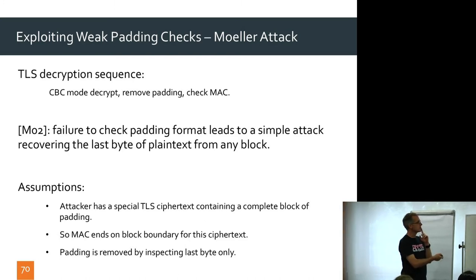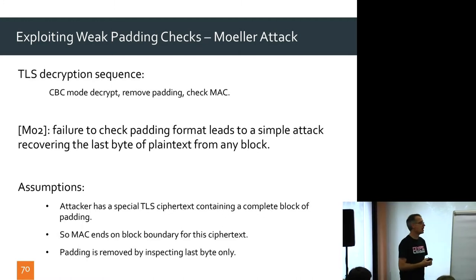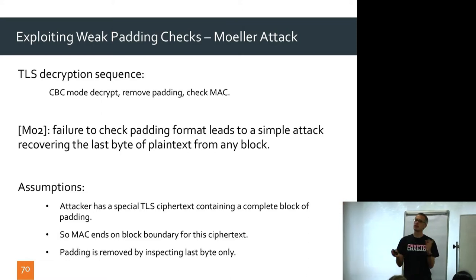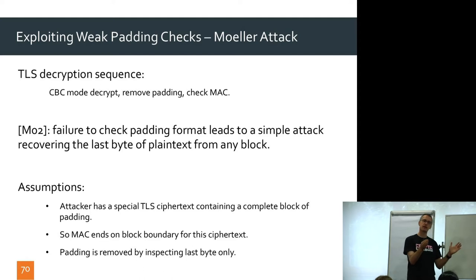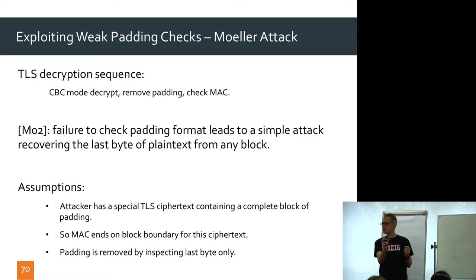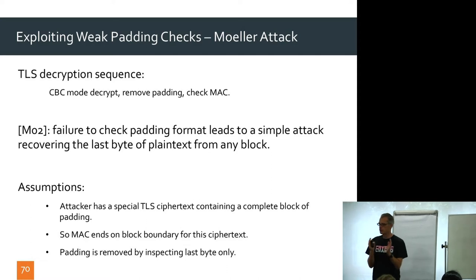We need some assumptions. The attacker has managed to get an encrypted special ciphertext in which there's a complete block of padding. The message and the MAC together ended on a block boundary, and then TLS added a whole block of padding. For AES with 16-byte blocks, that block would contain 0F, 0F, 0F, all the way through — a nice block full of padding.